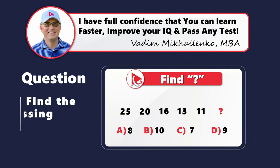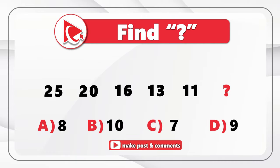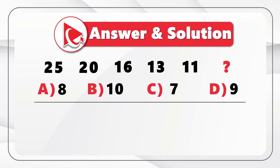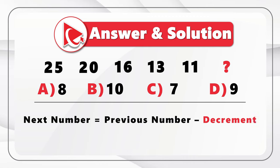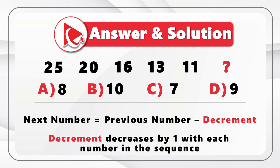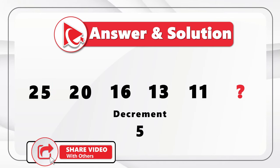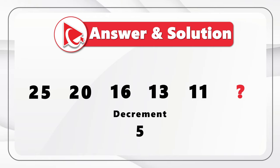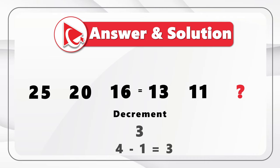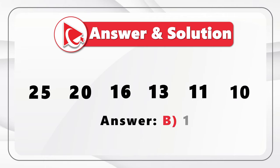It looks confusing, but believe me, there is hope at the end of the tunnel. Here we have a concept of decrement, and the pattern is that the next number is calculated as the previous number minus the decrement, and the decrement increases by 1 with each number in the sequence. Our first number is 25 and the initial decrement is minus 5. So: 25 minus 5 equals 20, 20 minus 4 equals 16, 16 minus 3 equals 13, 13 minus 2 equals 11, and 11 minus 1 equals 10. The correct answer is choice B — 10.